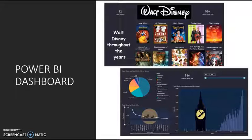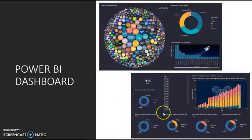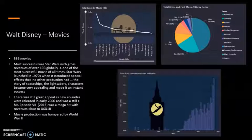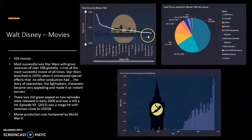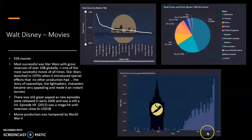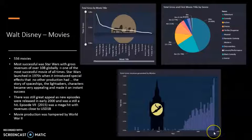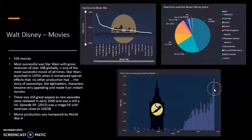Hi, I'm Ariba, the business intelligence analyst of this group. I have created a Power BI dashboard which consists of four sheets with various graphs. In total, we wanted to cover the Walt Disney Company's journey from 1937 to 2016. We found there were 556 movies in this dataset, with Star Wars being at the highest revenue. We used a line graph to show a comparison of revenue generation by each movie title, and this shows how throughout the years Disney movies earned more and more — it seems Disney is getting better at what it does.